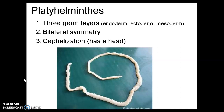Of the animals in Platyhelminthes, some of the things they have in common is that they have three germ layers: endoderm, ectoderm, and mesoderm. As you may recall from the Cnidarian notes, cnidarians only have endoderm and ectoderm, so now we have that third germ layer added in. This is also where we start to see bilateral symmetry — a left and a right side — and also cephalization, the formation of a head.